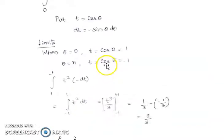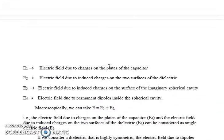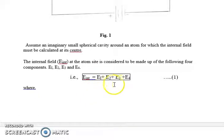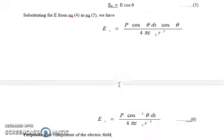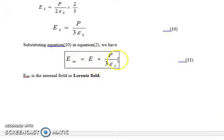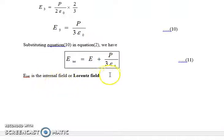We already know that E_int = E1 + E2 + E3 + E4, where E1 + E2 = E and E4 = 0. So E_int = E + E3. Now we have E3 = P / (3ε₀). Therefore E_int = E + P / (3ε₀). This is the internal field expression, which is called the internal field or Lorentz field.